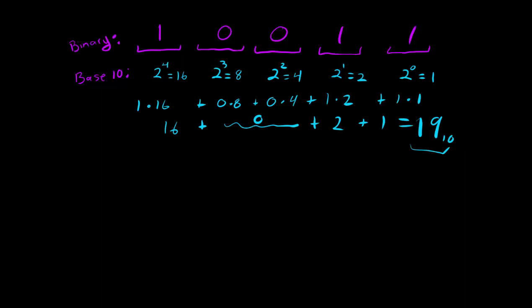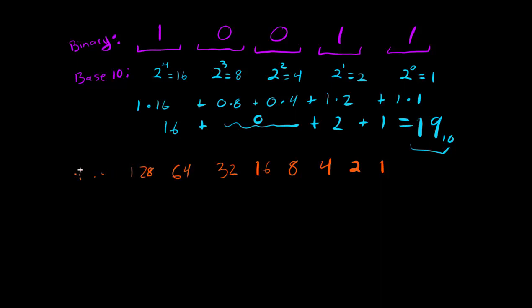Now here's a quick mental trick — this is just how my brain processes binary. My brain can easily double a number. So I start with the value 1 on the right and just keep multiplying by 2 as I move left: 1, 2, 4, 8, 16, 32, 64, 128, and so on. I can do that pretty easily in my mind, so when I see a binary number I just scan from right to left assigning those doubling values.